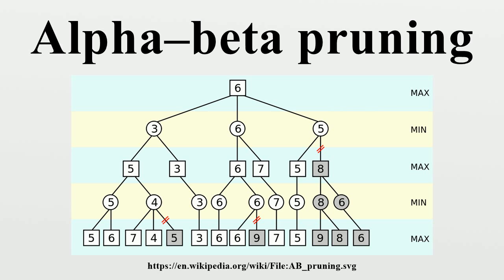McCarthy proposed similar ideas during the Dartmouth Conference in 1956 and suggested it to a group of his students. In 1961, Alexander Brudno independently discovered the alpha-beta algorithm, publishing his results in 1963. Donald Knuth and Ronald W. Moore refined the algorithm in 1975, and Judea Pearl proved its optimality in 1982.